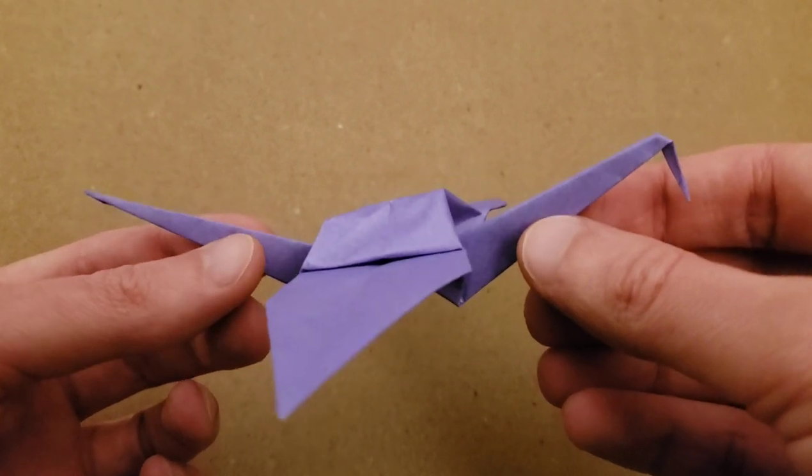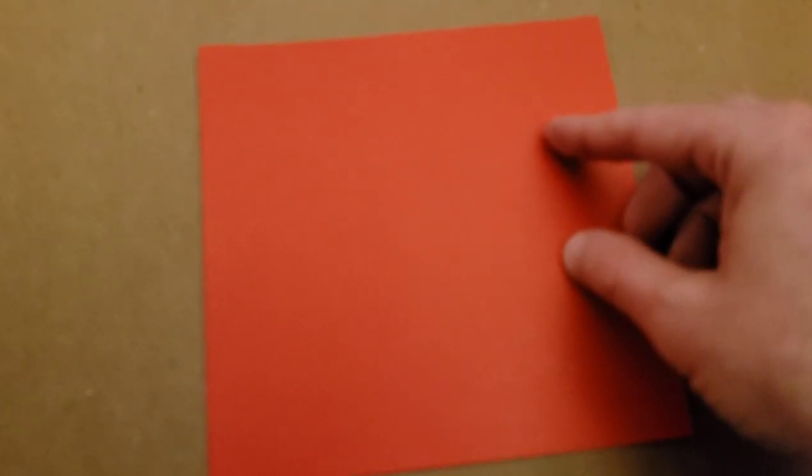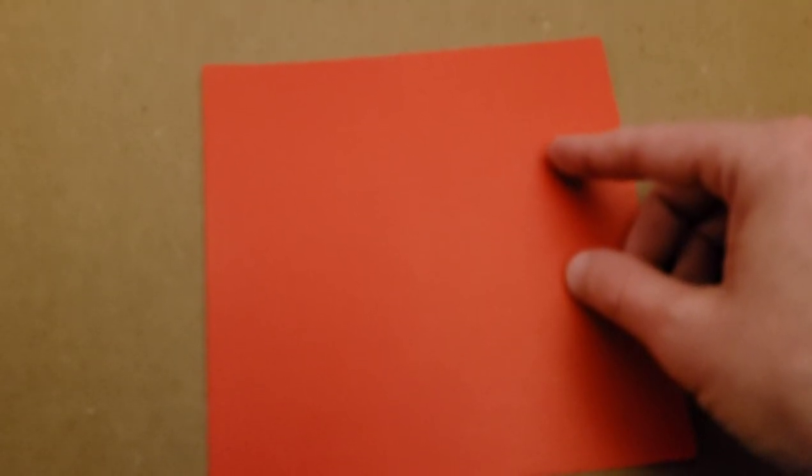Now I am using origami paper, and today we're going to make a red one, sort of like a phoenix. Alright, so without further ado, let's get started.